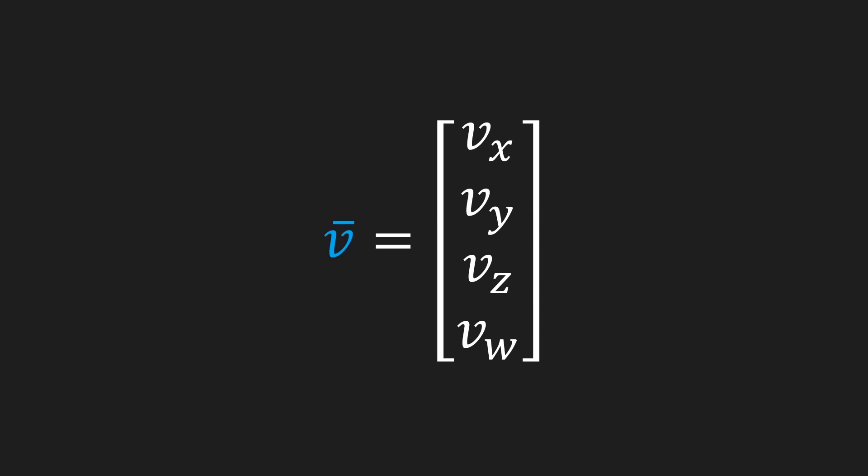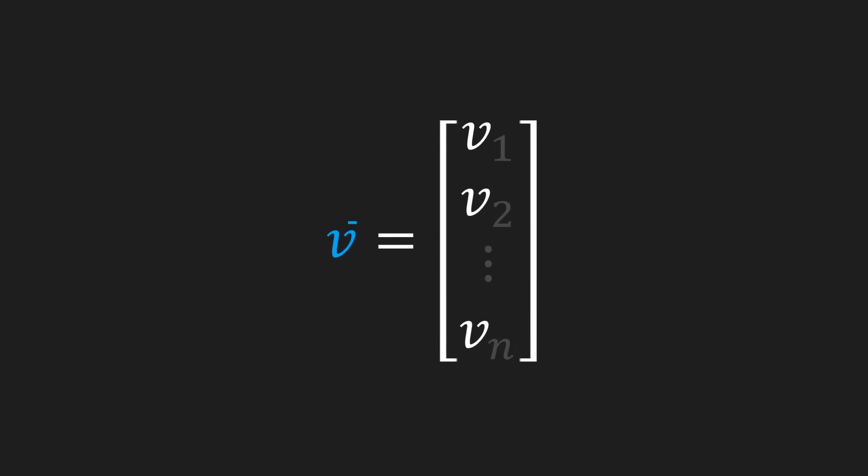There's one last change I'm gonna make here, and that is that I'm gonna write these components as the subscript of the vector's name. The reason why we do that is to not cause any confusion when we have multiple vectors. Finally, we can generalize this to n-dimensional vectors. We do that by not using x, y, z and w but just counting the components from 1 up to n, where n is the dimension of our vector.